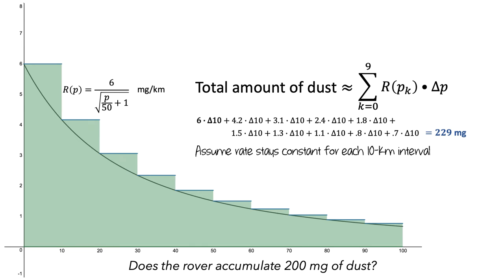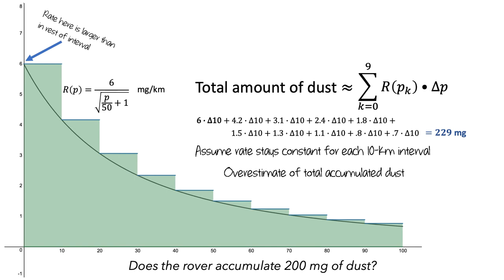Since we're assuming that the rate of accumulation was constant for each 10-kilometer interval, the number we've computed is an approximation. In particular, we can see that the rate of accumulation at the start of each interval is larger than the rate for the rest of the interval, which means the number we computed is an overestimate. If I highlight the parts of our Riemann sum computation that are contributing to the overestimate in each interval, we can see the amount of error in our estimate.